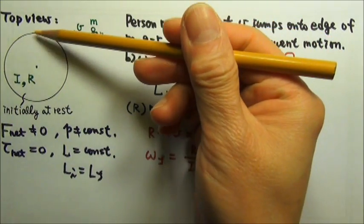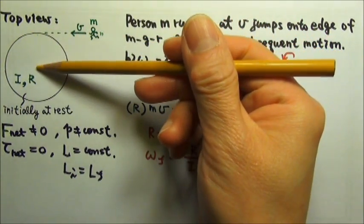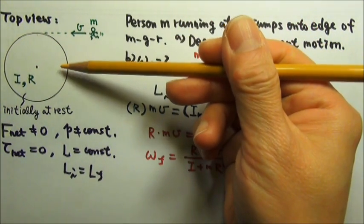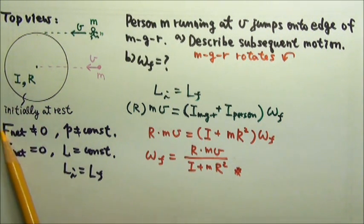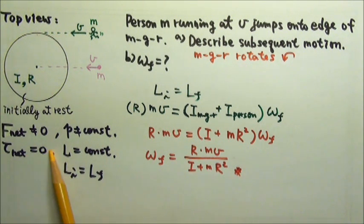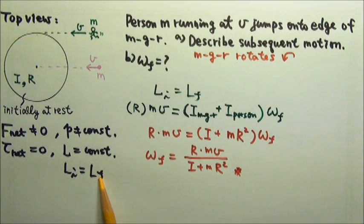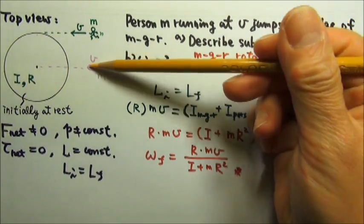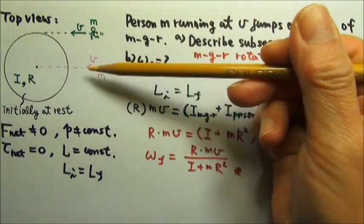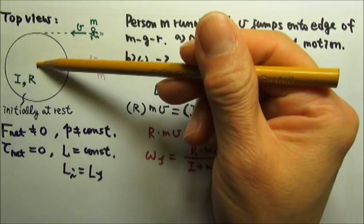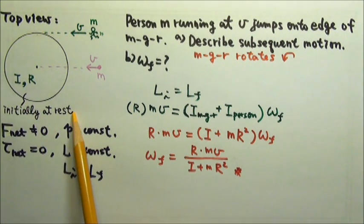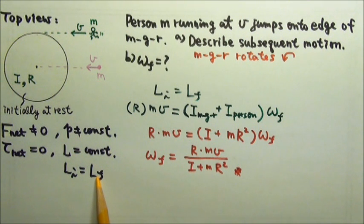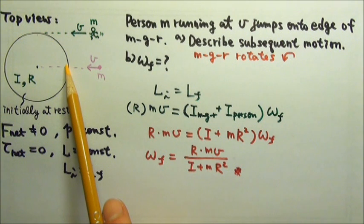What if the person, instead of running towards the edge of the merry-go-round, runs towards the axle? Again, when the person lands, there will be a jolt at the axle, so the net force is not zero and momentum is not conserved. However, the net torque is still zero, so we still have conservation of angular momentum. But this time, the initial angular momentum of the person is zero, because the perpendicular distance between the line of motion and the axis is zero. Therefore, there is no initial angular momentum for either the person or the merry-go-round. The final angular momentum is also zero, so the merry-go-round is not going to rotate — everything will just be at rest after the person lands.